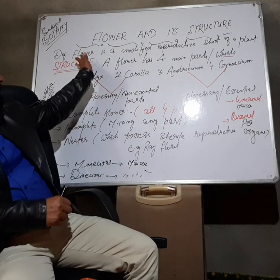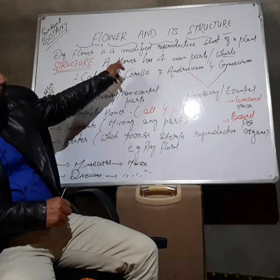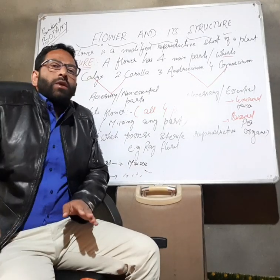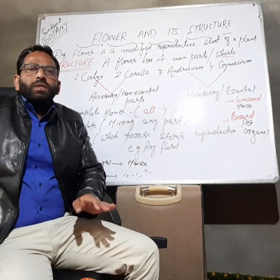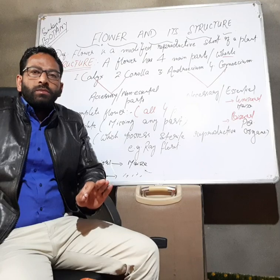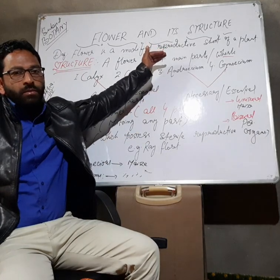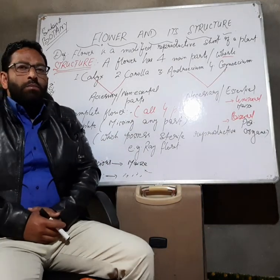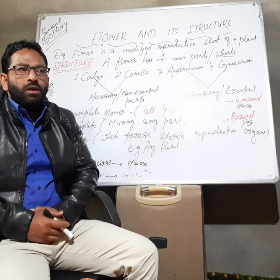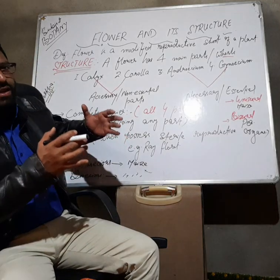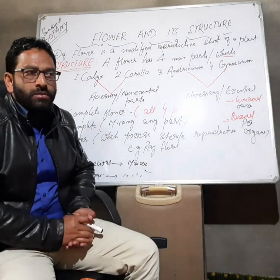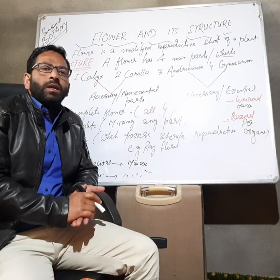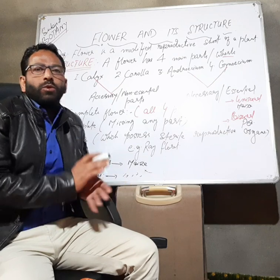Flower is a modified reproductive shoot of a plant. When we are talking about the flower, it is a shoot but it is a modified shoot. It is modified in the sense that the flower is that part of a plant which helps in sexual reproduction. No other part of the plant, excluding the flower, helps in the process of sexual reproduction.